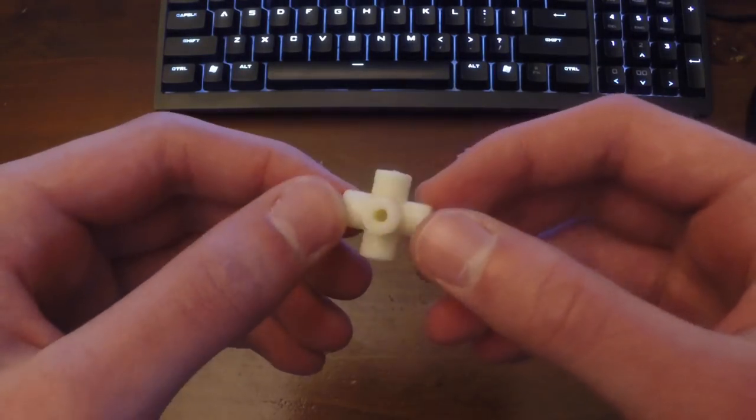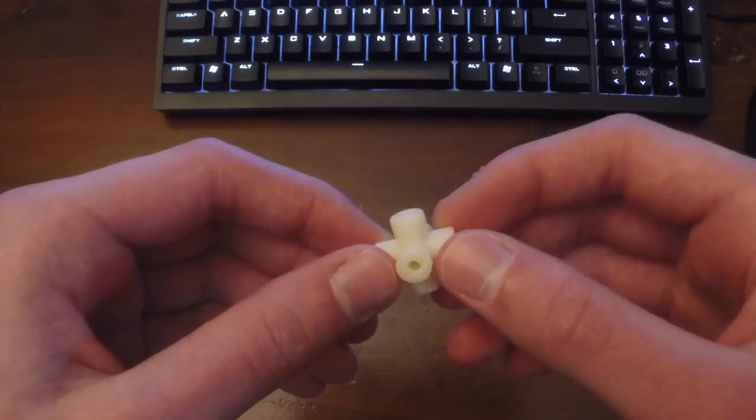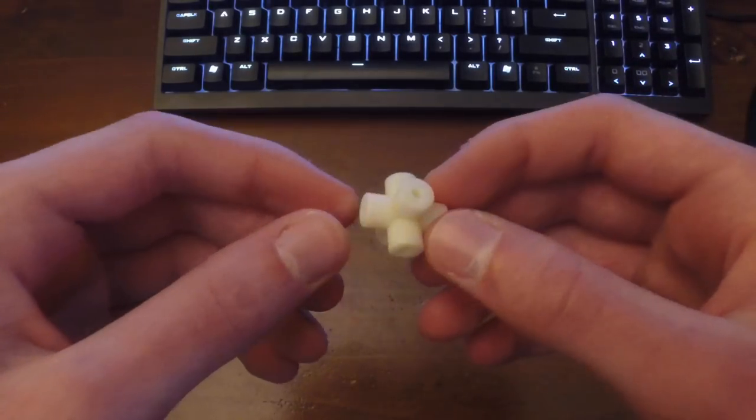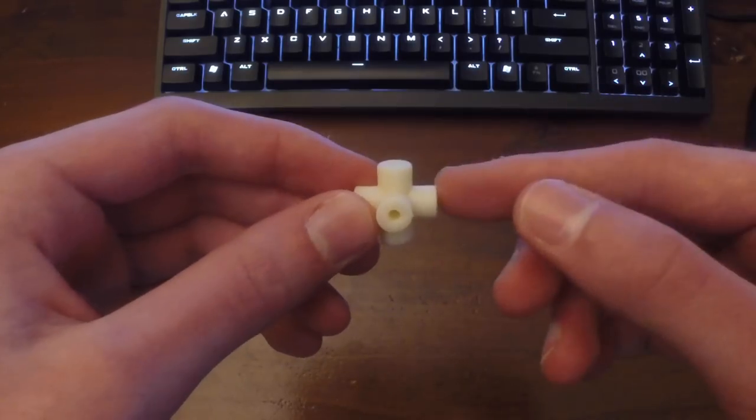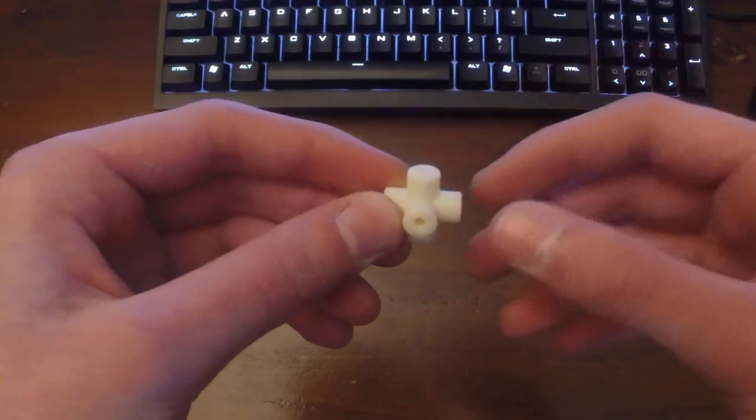So this probably looks pretty familiar. It's a Rubik's Cube core, and it has three axes: the X axis, the Y axis, and the Z axis.